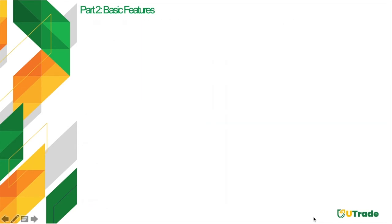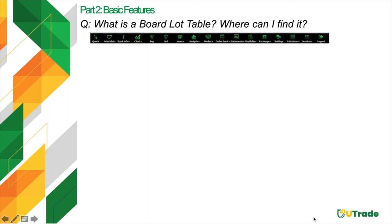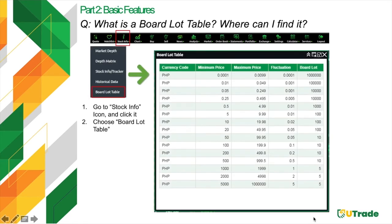Moving on to the Board Lot Table. A board lot table is the standardized number of shares set by the Philippine Stock Exchange based on a given price range for a stock — it dictates the minimum number of shares that can be bought or sold. To find it, go to the Stock Info icon and select the Board Lot Table option. It is composed of the price range, tick size (allowed price step), and the board lot itself indicating the minimum shares you can buy or sell.